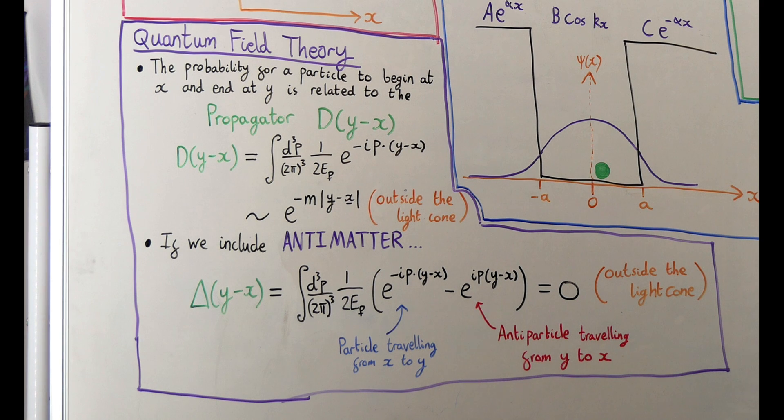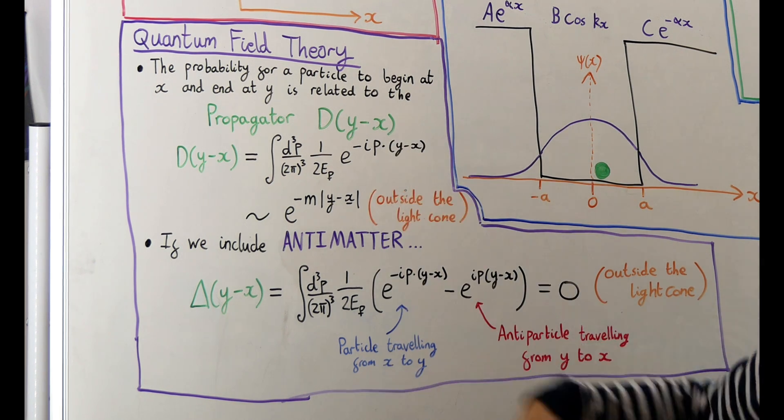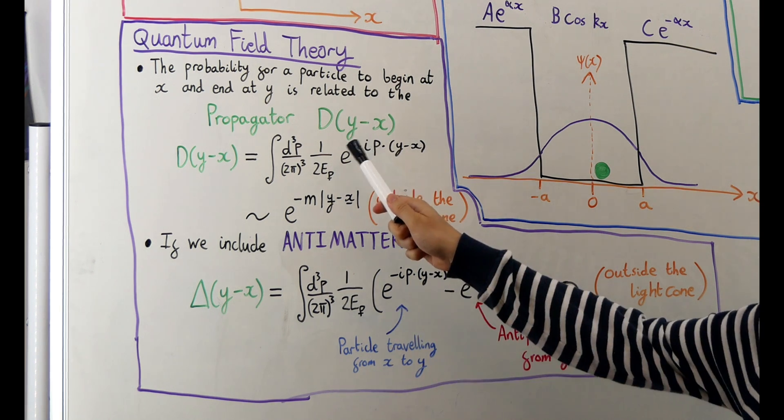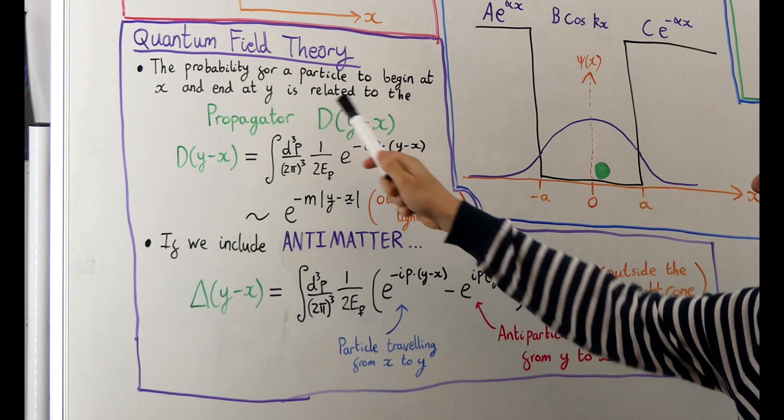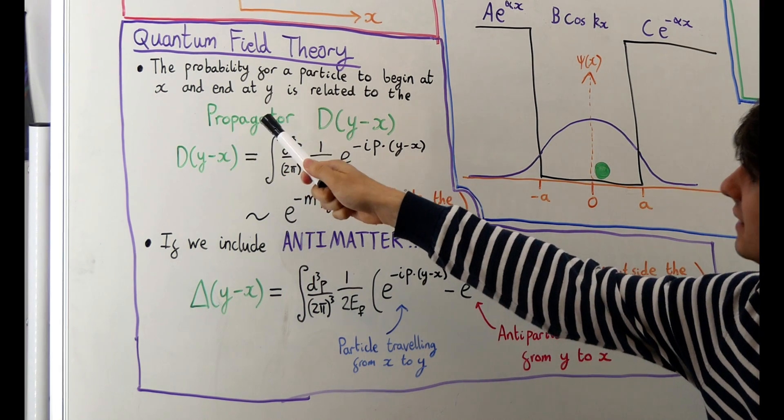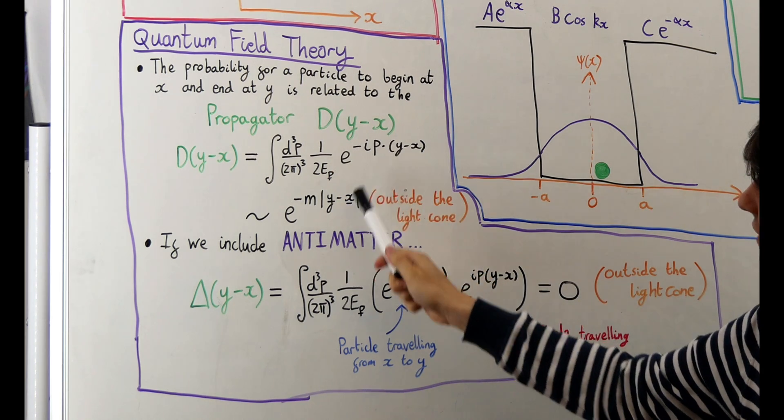The answer is to be found in quantum field theory. In quantum field theory, instead of dealing with a wave function, we deal with something called a propagator. Instead of giving you the probability of finding a particle at a certain location, the propagator can tell you the probability for a particle to begin at a position x, move, and then end at some other position y.